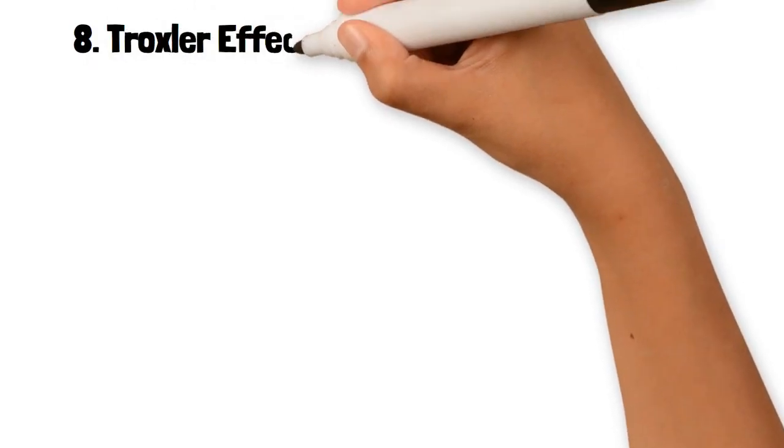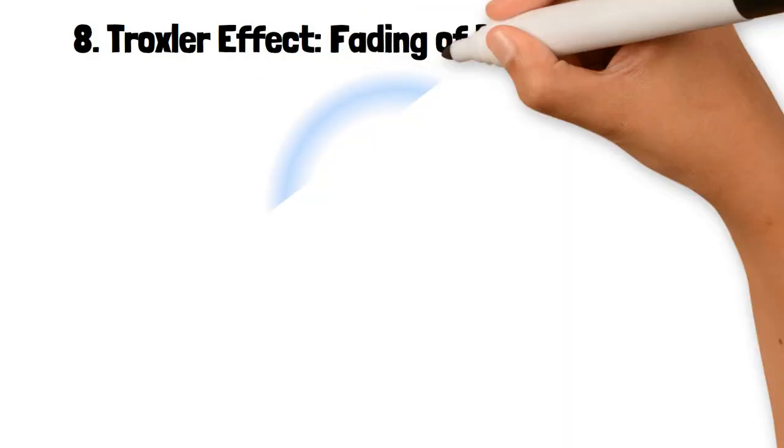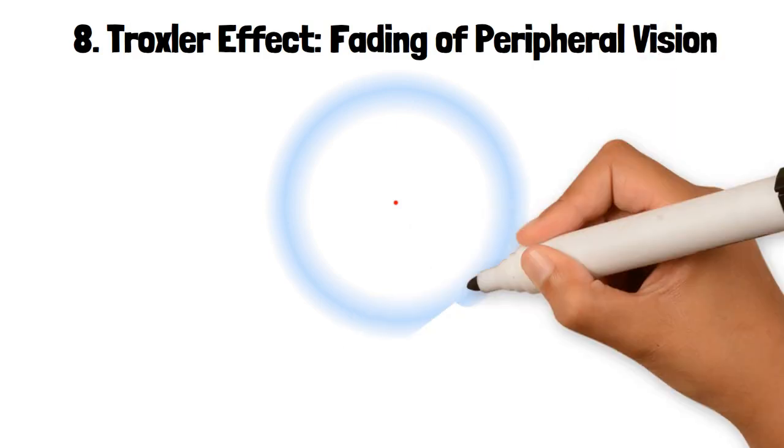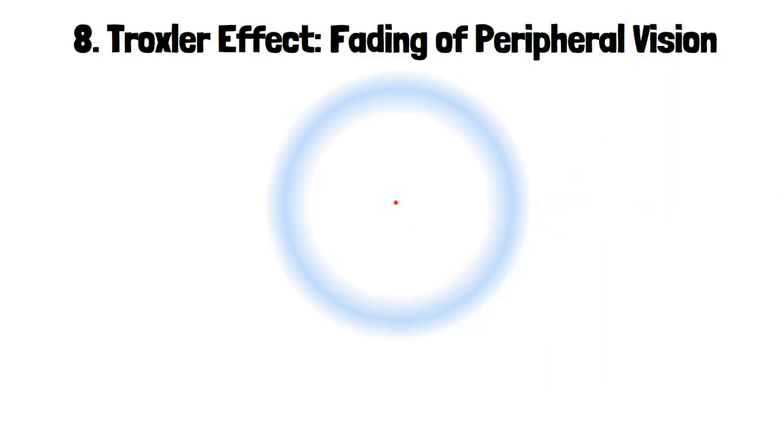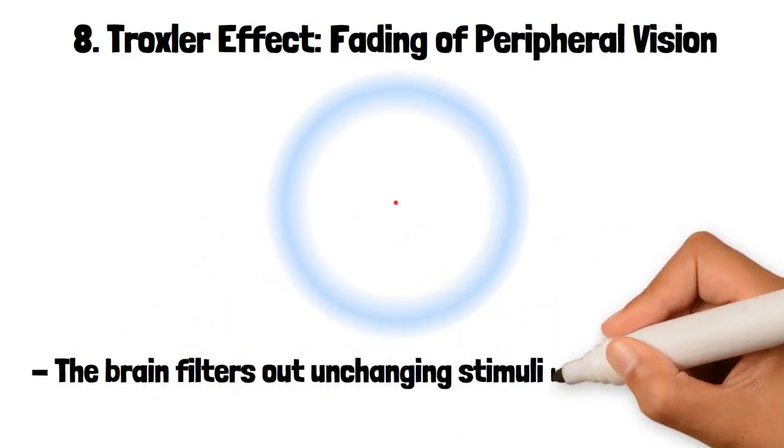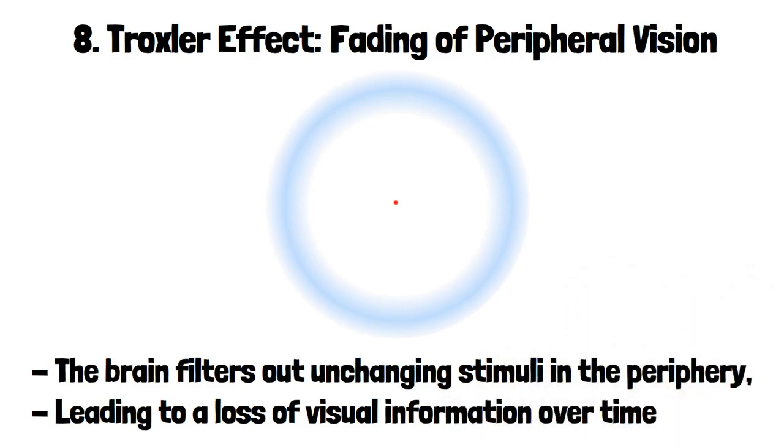8. Troxler Effect: Fading of Peripheral Vision. The Troxler Effect is an optical phenomenon where objects in the peripheral vision fade or disappear when one focuses on a central point. This occurs because the brain filters out unchanging stimuli in the periphery, leading to a loss of visual information over time.